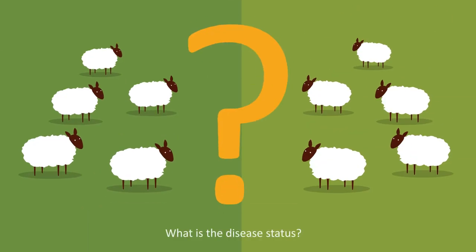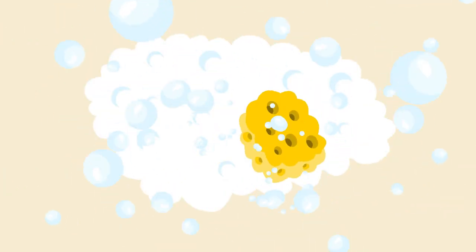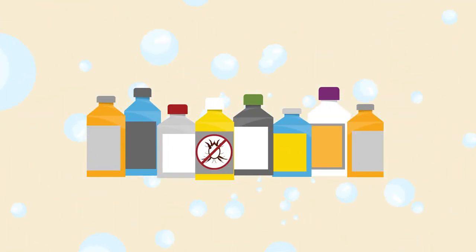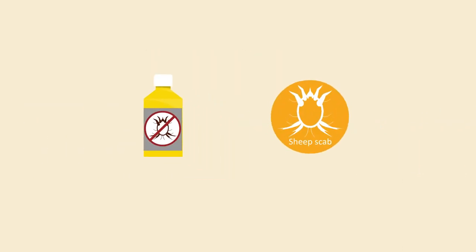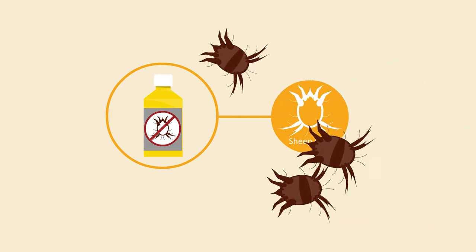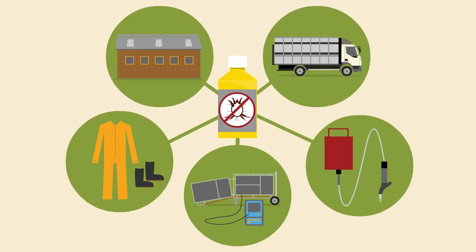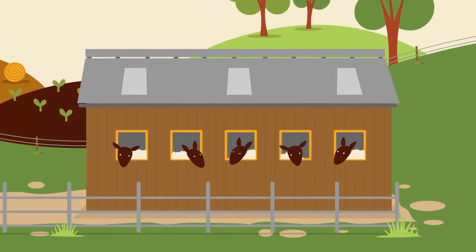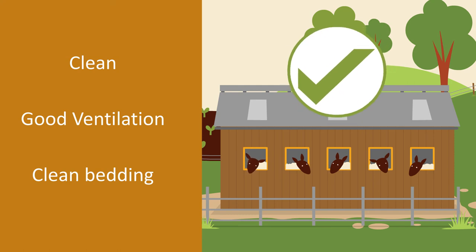Knowing disease status is important, and prevention is always better than cure. Hygiene is very important when preventing disease. Always practice good hygiene, including the use of effective disinfectants. Remember, not all disinfectants are effective against all pathogens, so it's crucial you choose a disinfectant that will kill the pathogen you are aiming to control. Sheep scab mites can live off the host animal, so it's very important to disinfect any shared equipment between flocks. Provision of good environmental conditions — clean, well-ventilated and well-bedded housing — all help to promote good health and reduce pathogen numbers.